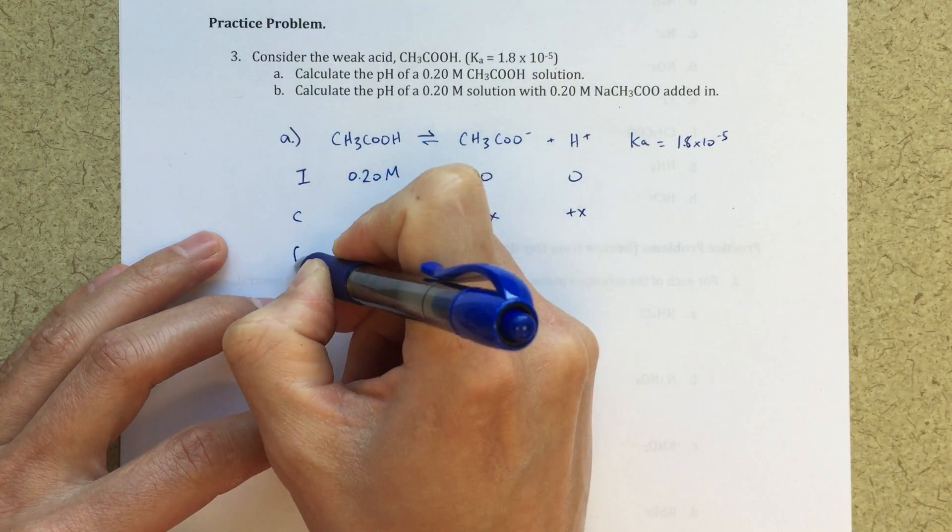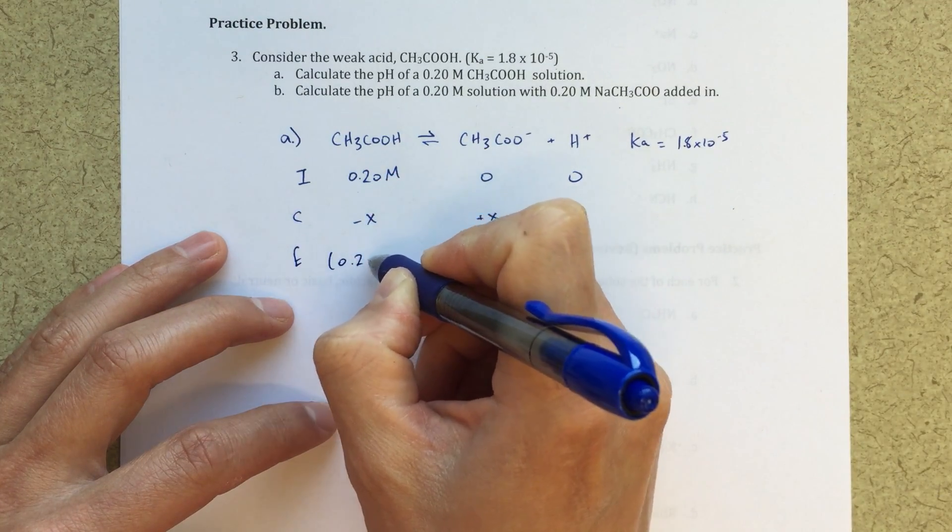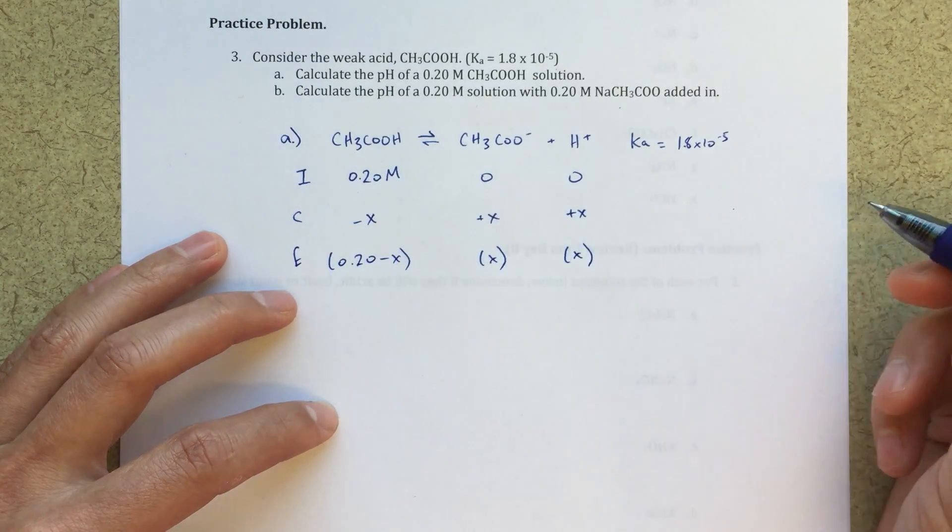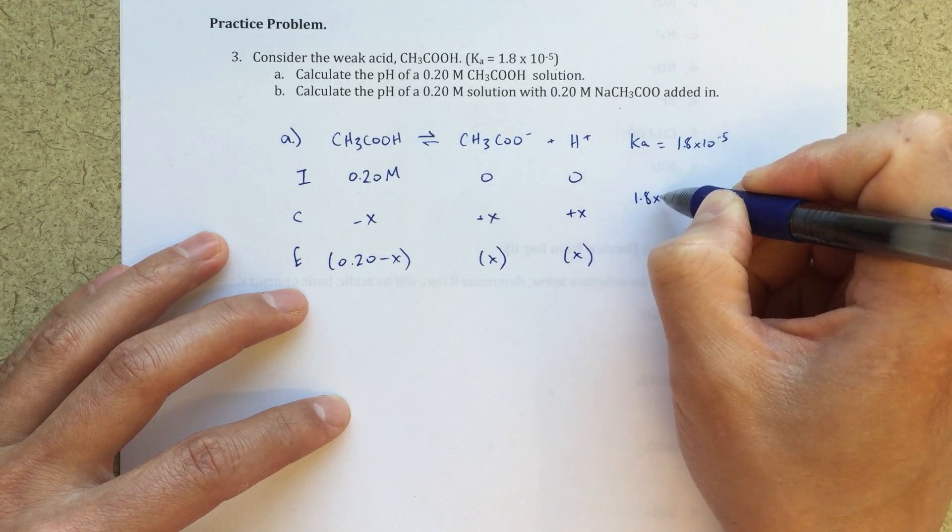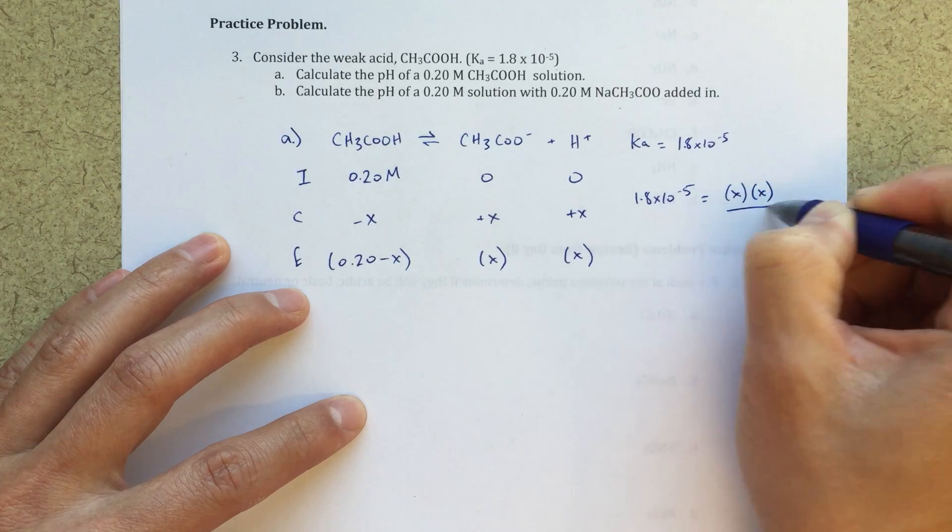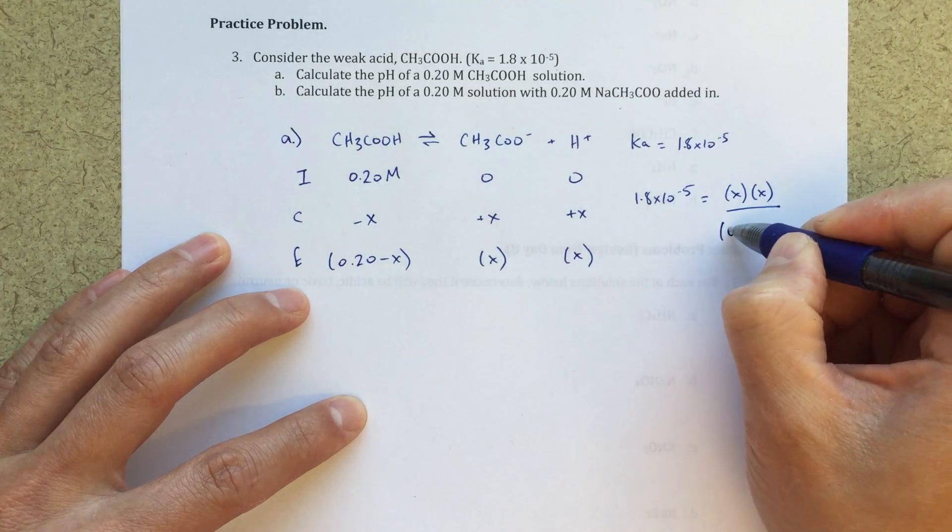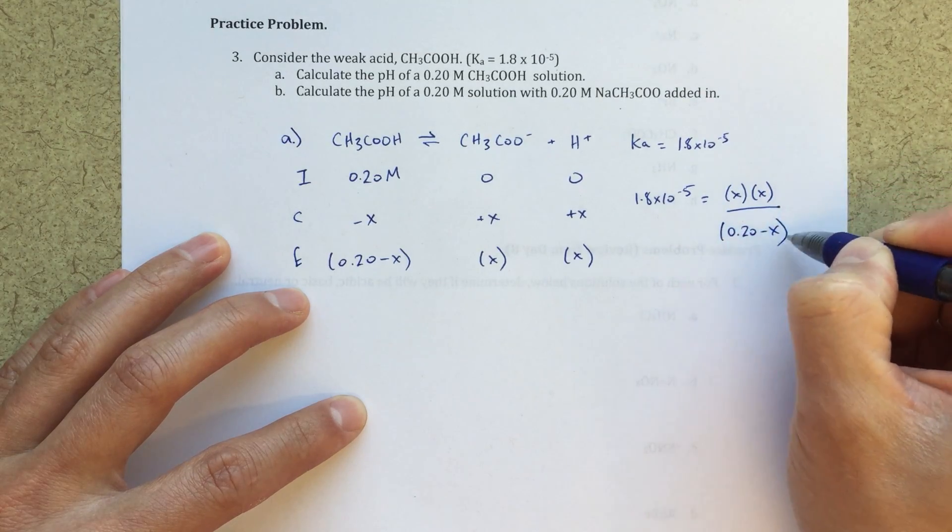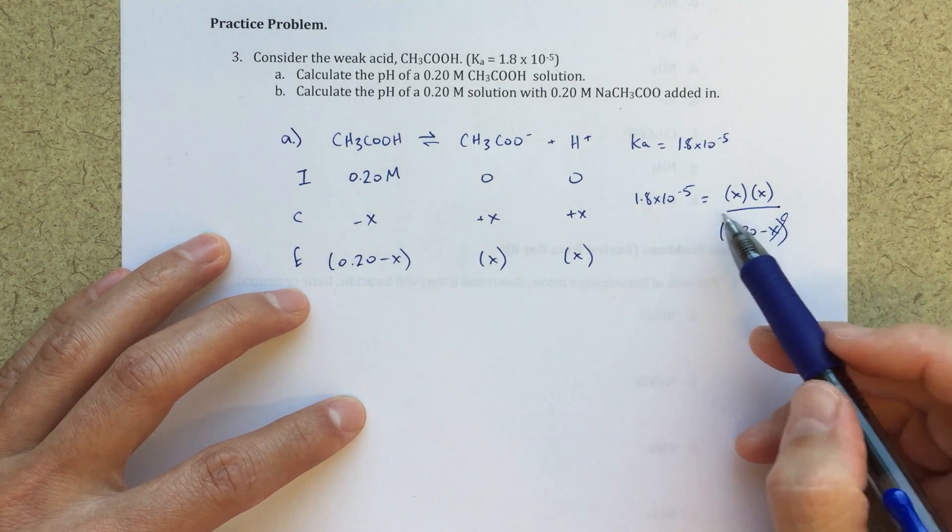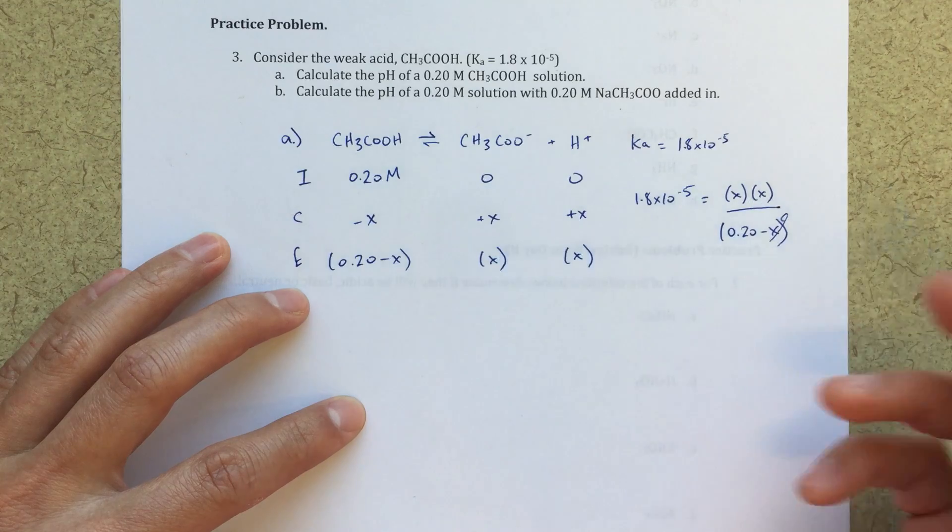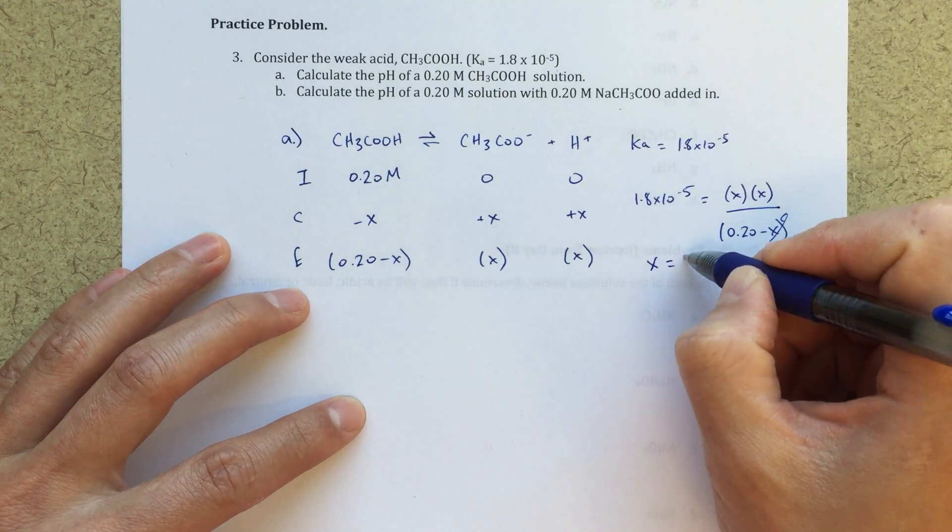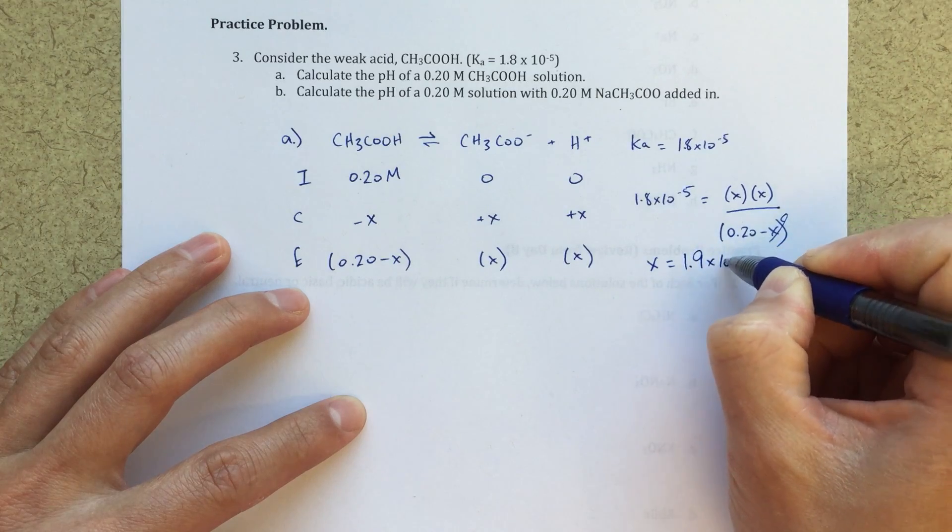Now, at equilibrium, I'm going to have 0.20 minus x. And now I can solve for x essentially. So 1.8 times 10 to the minus 5th is going to equal x squared or x times x over 0.20 minus x. I can assume that this minus x term is negligible because this is such a small Ka, this x value I expect to be very small. I can go and solve for x. That's going to equal 1.9 times 10 to the minus 3rd.